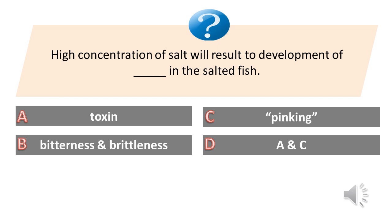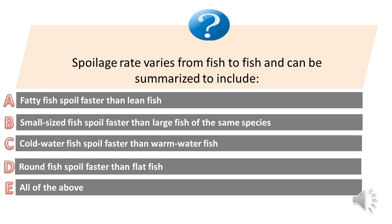Spoilage rate varies from fish to fish and can be summarized to include: A. Fatty fish spoil faster than lean fish. B. Small sized fish spoil faster than large fish of the same species. C. Cold water fish spoil faster than warm water fish. D. Round fish spoil faster than flat fish. E. All of the above. Answer is E. All of the above.